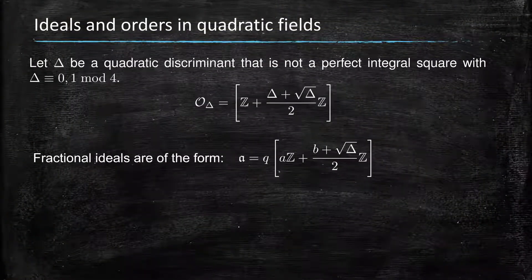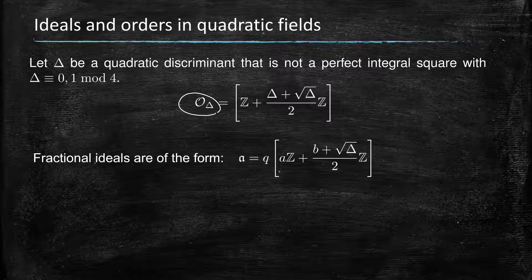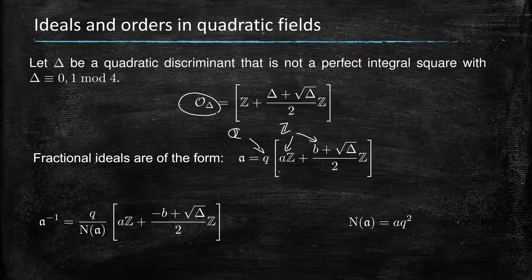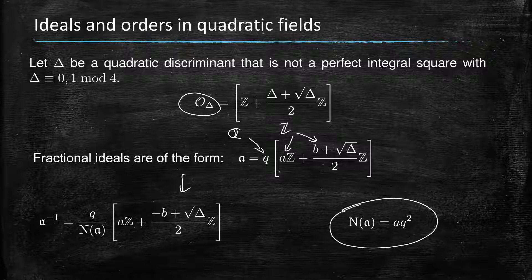We can define an order in a quadratic number field, real or imaginary, from its discriminant. A discriminant is a number that is not a square and that is congruent to 1 or 0 modulo 4. Fractional ideals are of the form q times a module, where q is a rational and a and b are integers. The inverse is given by q over the norm times an expression depending on a and b. The norm is given by the first coefficient, making this a very convenient way to write fractional ideals.